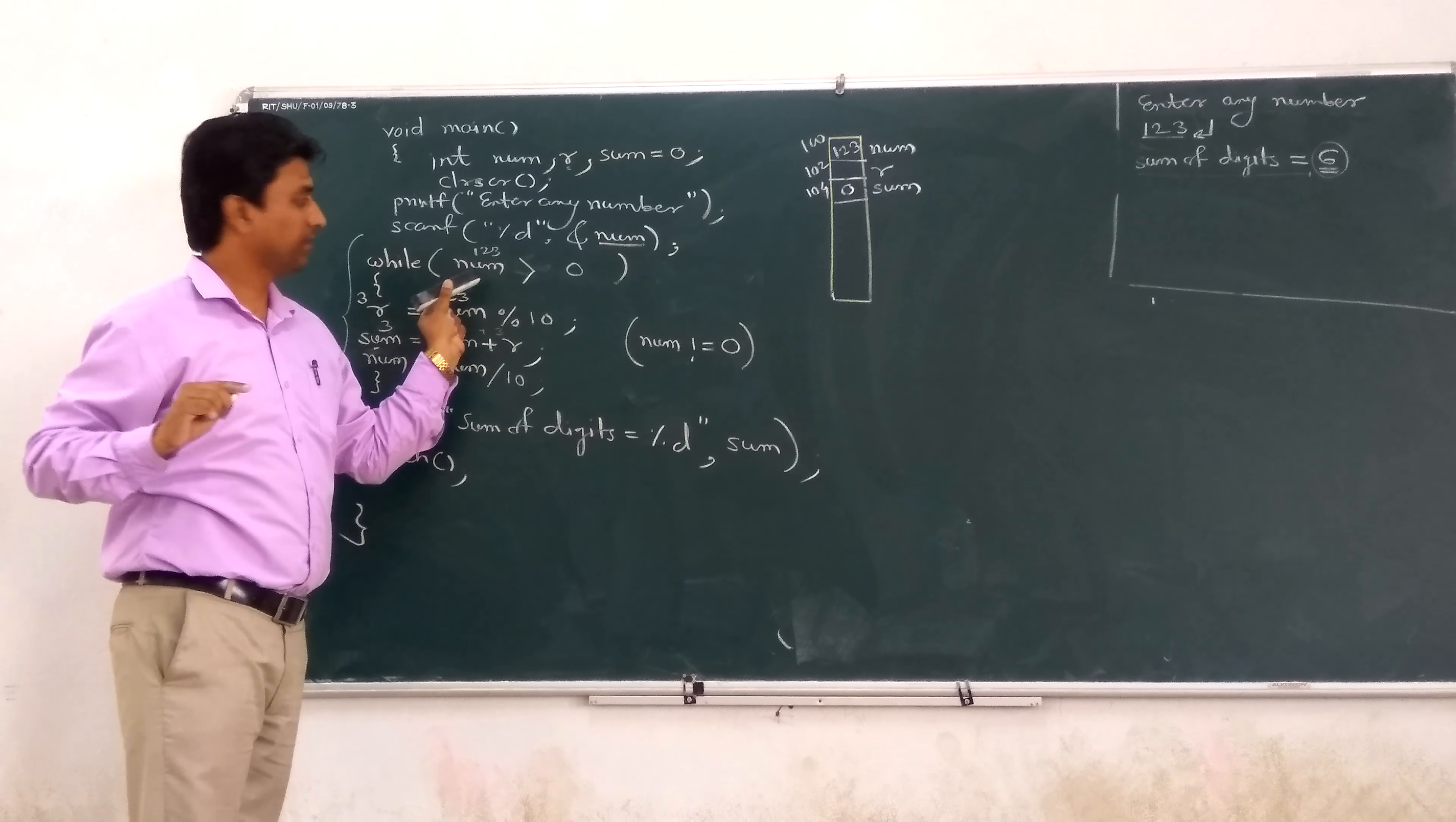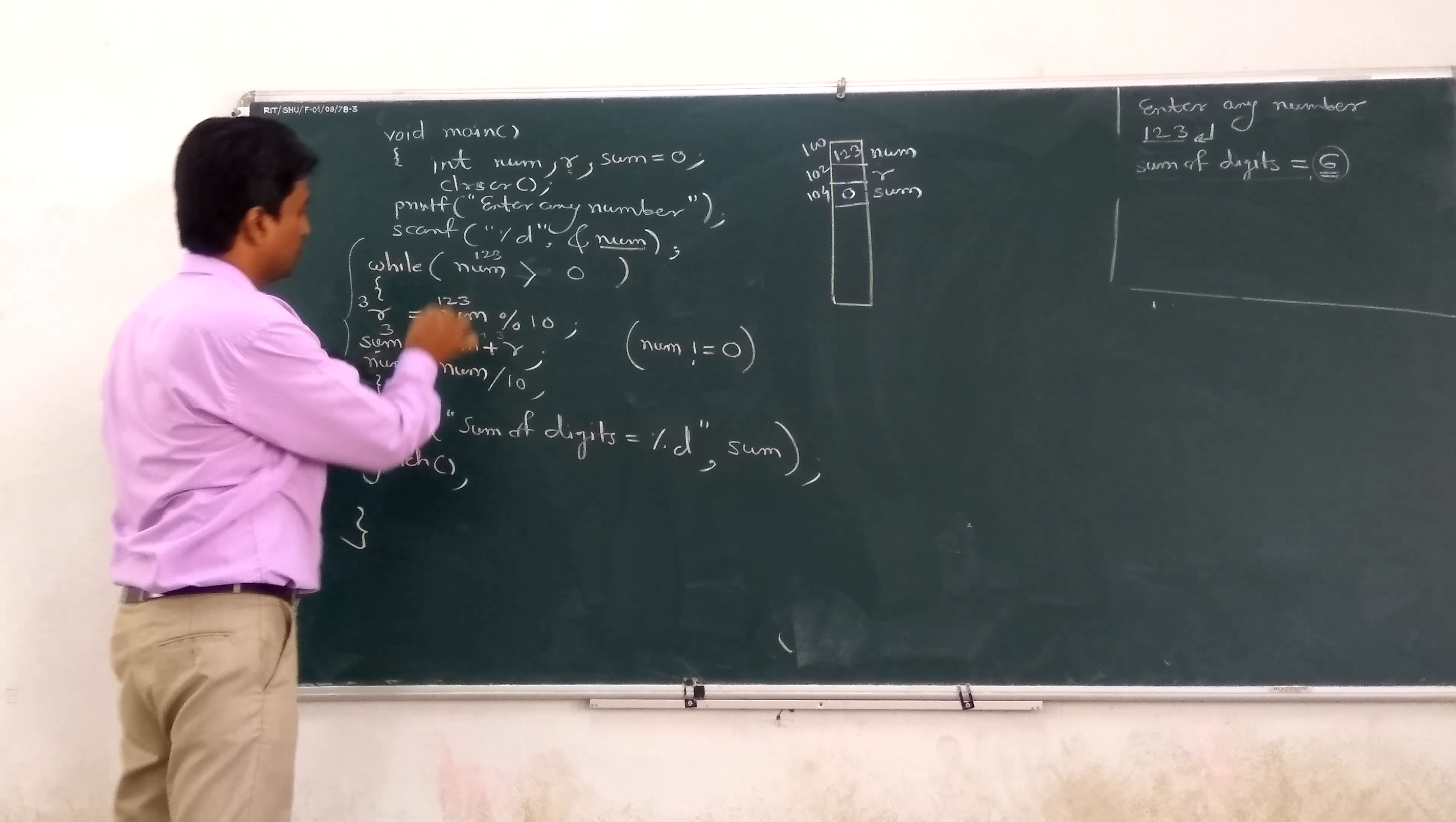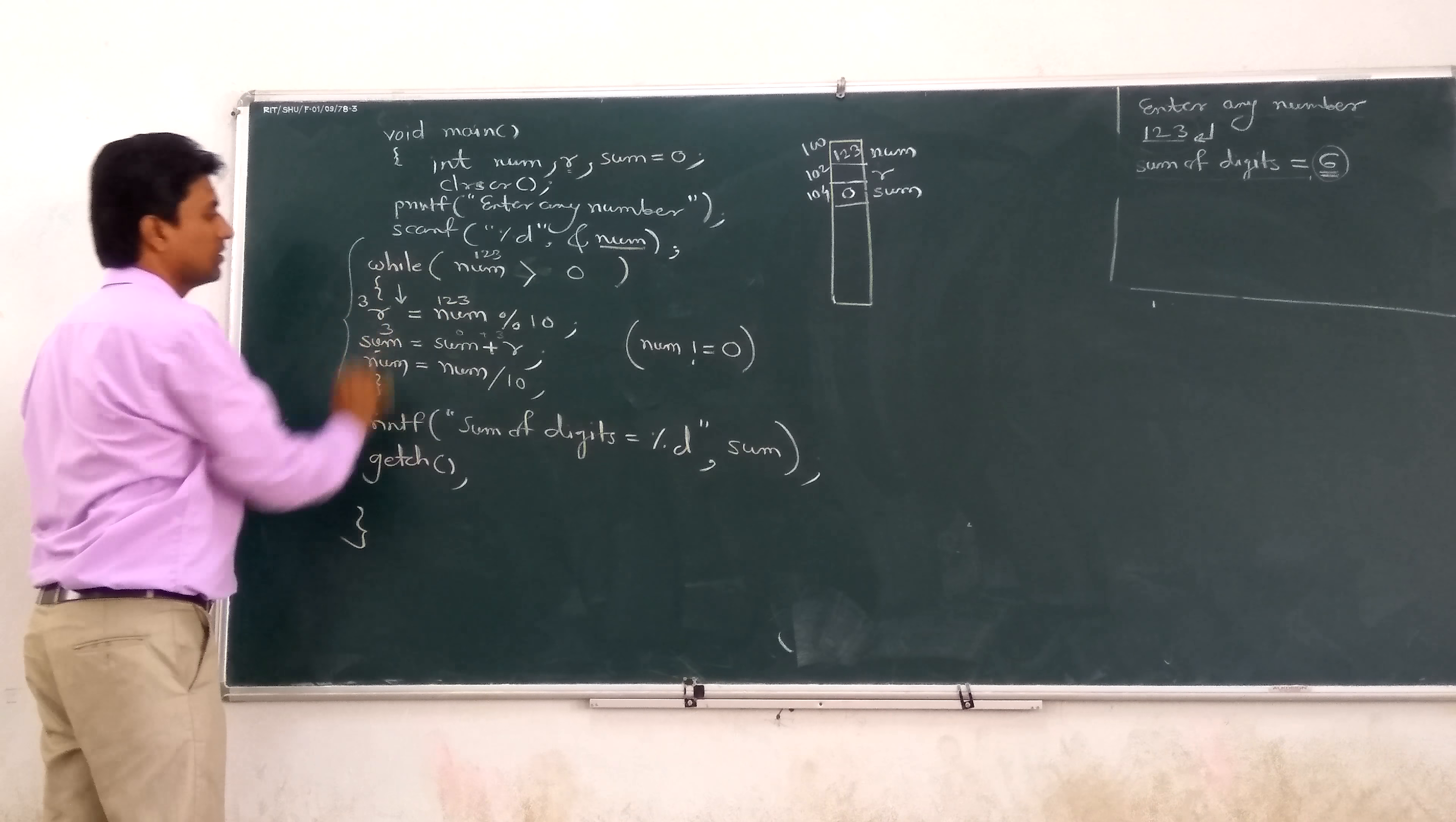That is placed in each execution of each statement at the read time. So 123 greater than 0, condition true. So cursor gets the entry into body of while. After that, what is the number? 123 mod of 10, what is the result? 3 actually is stored into RAM.